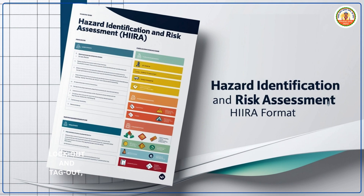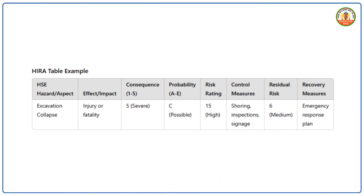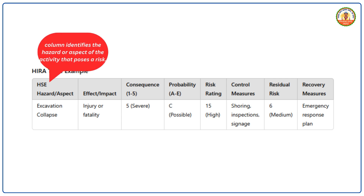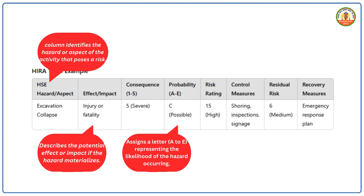The HIRA table is a structured format to document hazards, assess risks, and determine control measures. The columns are explained as follows. Hazard/Aspect: identifies the hazard or aspect of the activity that poses a risk — for example, for excavation work, the hazard could be collapse of excavation walls. Effect/Impact: describes the potential effect if the hazard materializes — for example, injury or fatality from collapsing walls. Probability (A–E): assigns a letter representing the likelihood of the hazard occurring — for example, if a collapse is possible but not guaranteed, assign a score of C (possible).